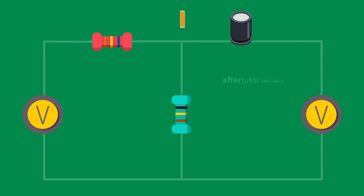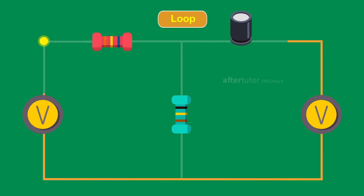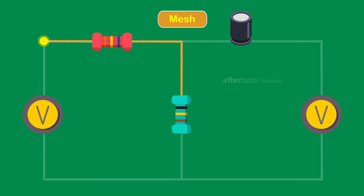Loop: When a path is traced such that the path ends at the same node where it started. A mesh is a loop that has no other loops inside it. The current flowing through all the elements of this closed path is mesh current.